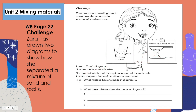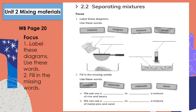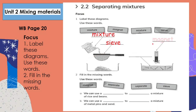Workbook page 20, focus. Let's label these diagrams using the words: mixture, magnet, mixture, and sieve. This is a mixture of rice and beans, and this is the sieve. This is the magnet, and this is a mixture of metal pins and sand.